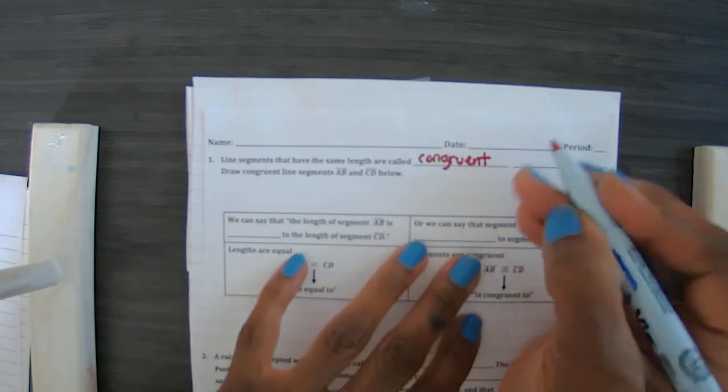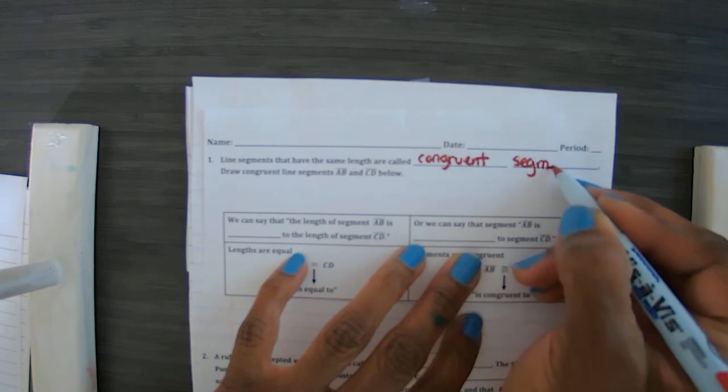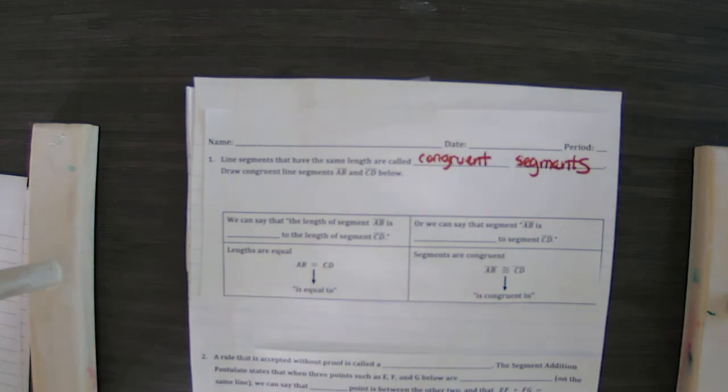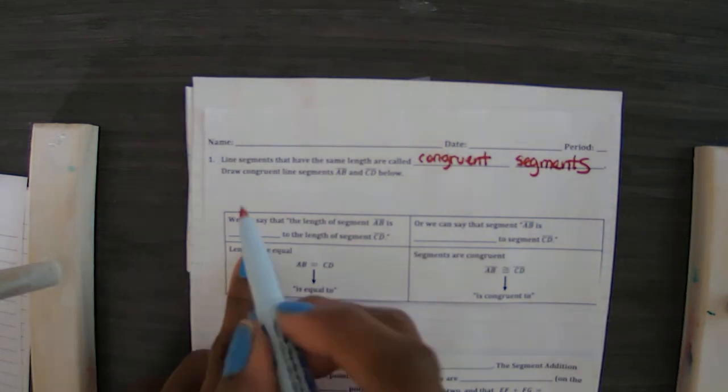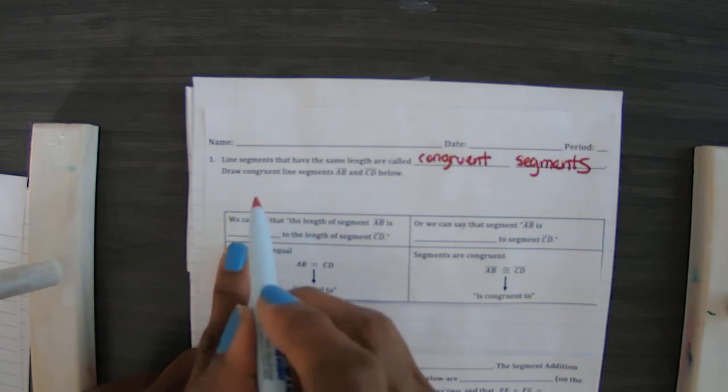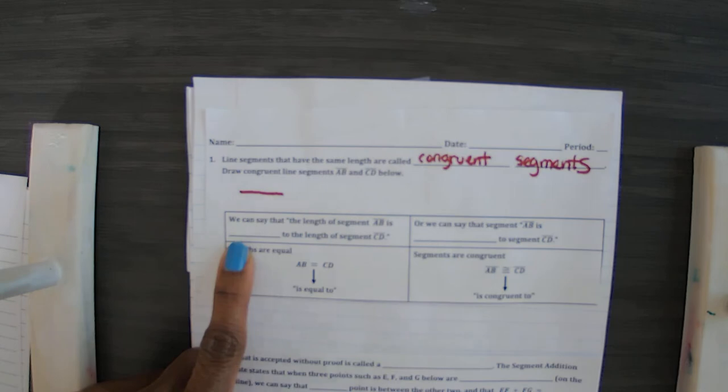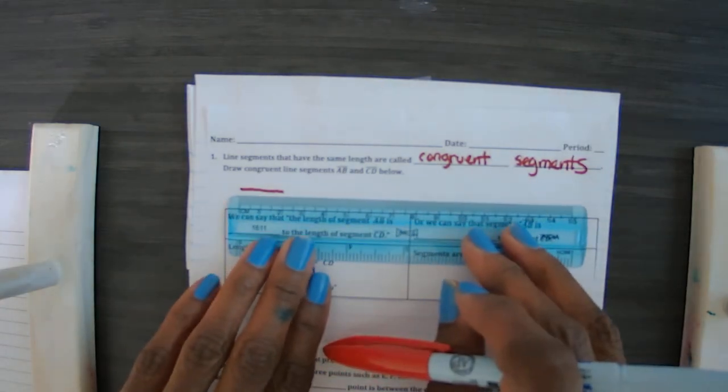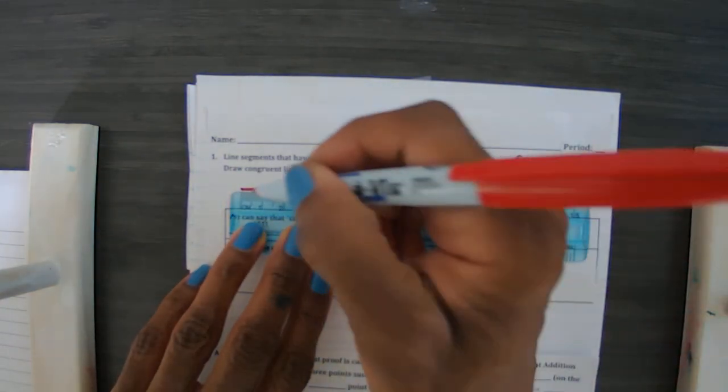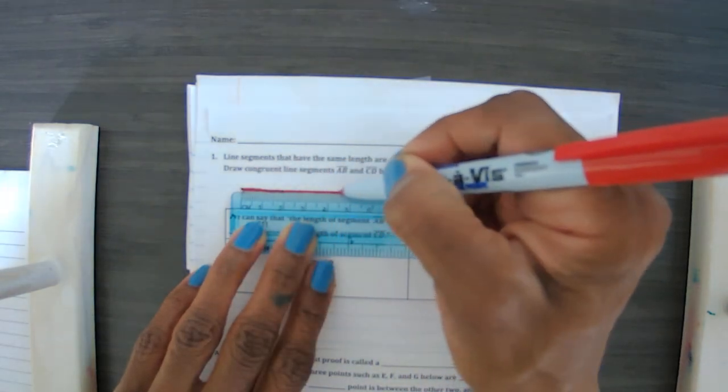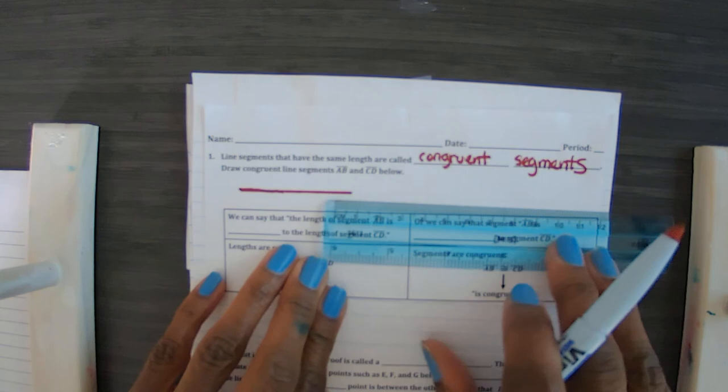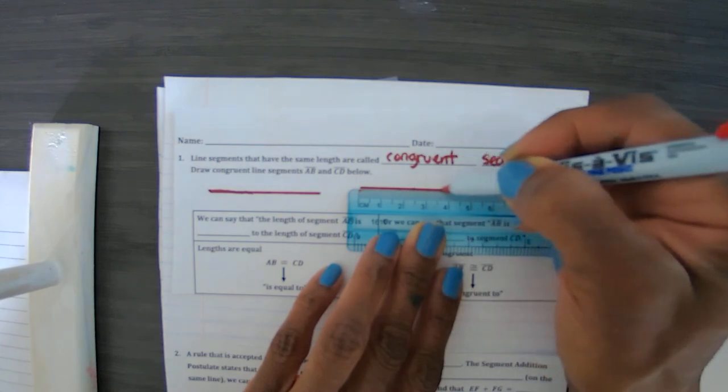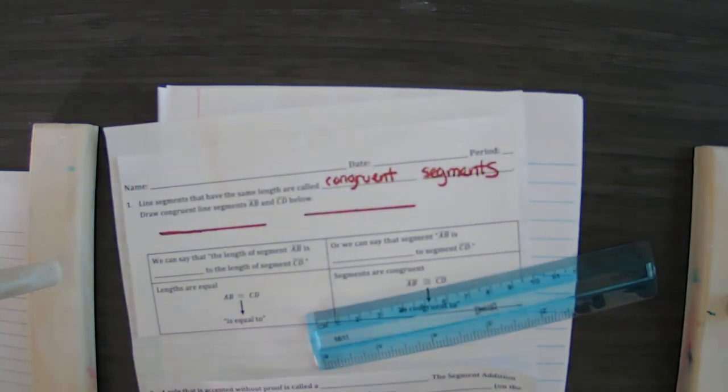Okay, draw congruent segments. So what we did in class was we took a small ruler and we just kind of drew our congruent segments like so. You may or may not have a ruler, but for you spatial people we want to have everything the same. So I'm gonna go five centimeters here, I'm gonna go over a little bit more and I'm also gonna make this one five centimeters. Okay, so those are my two congruent segments, they are both five centimeters.